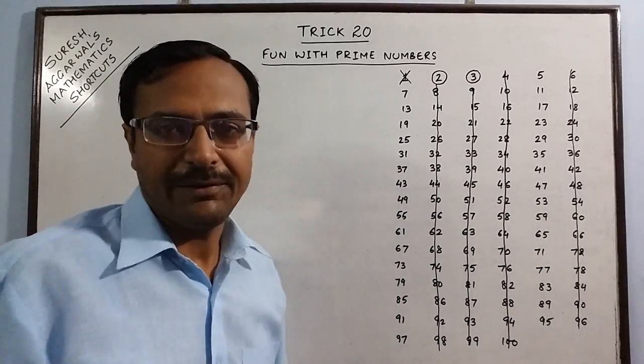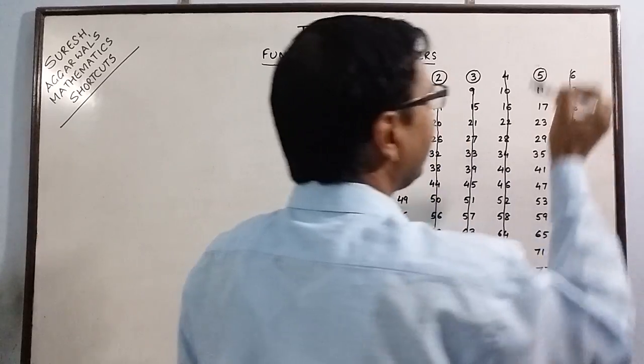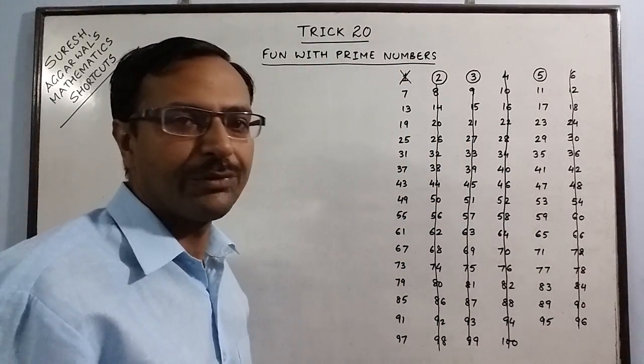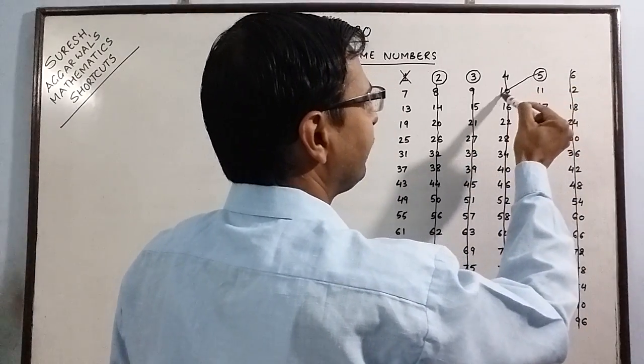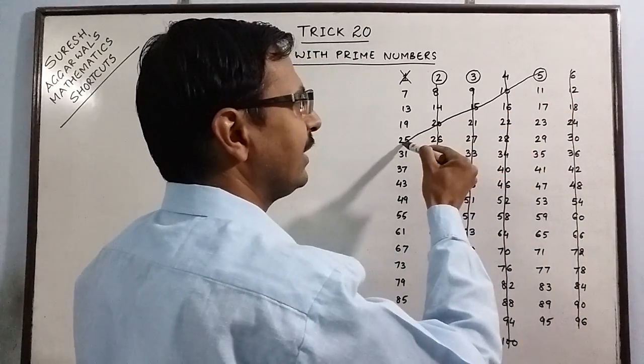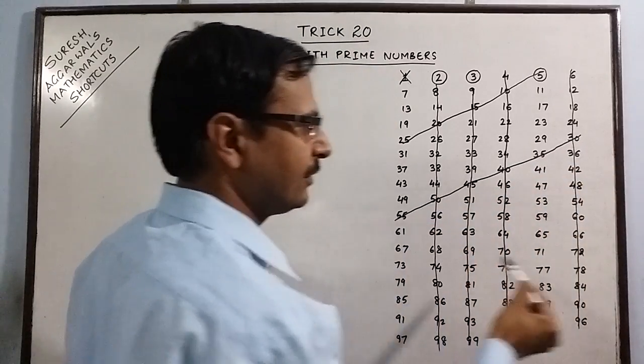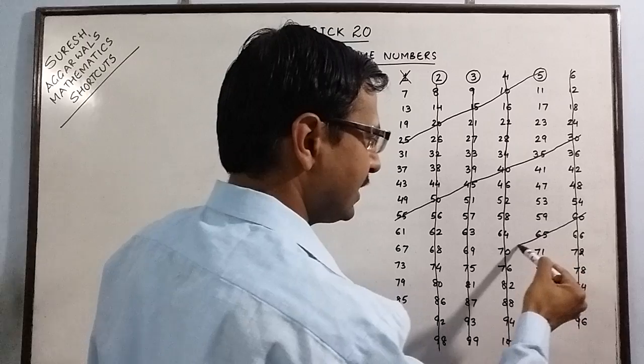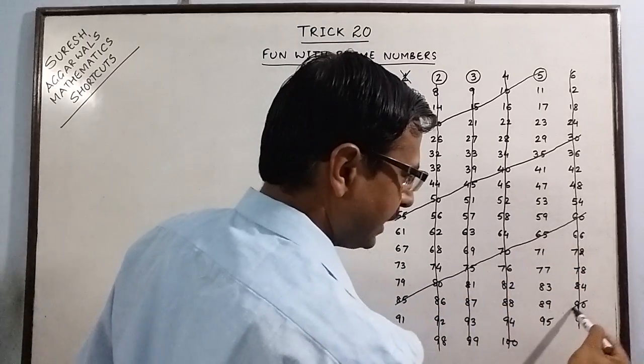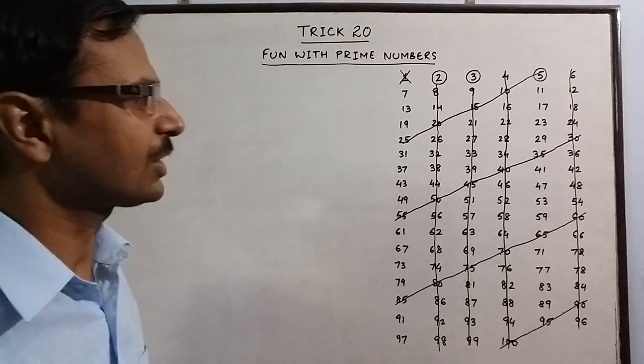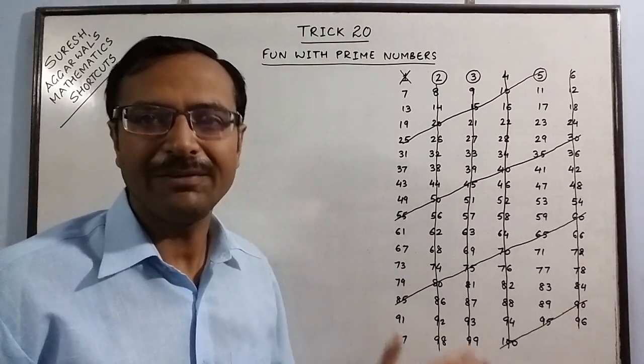Now move on to 5. For finding numbers divisible by 5, you have to move diagonally. Just see the table of 5: 5, 10, 15, 20, 25, 30, 35, 40, 45, 50, 55, 60, 65, 70, 75, 80, 85, 90, 95 and 100. So I have struck off all the numbers which were divisible by 5 as well.